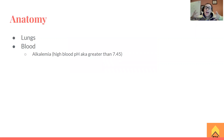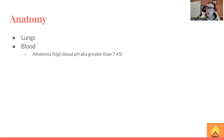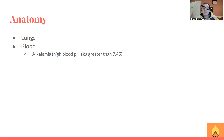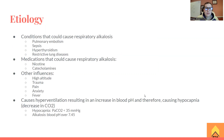So let's go over respiratory alkalosis. It's going to be a problem with the ability for the lungs to breathe properly. We're going to see alkalemia in the blood — when something becomes more alkaline, we are getting higher up on the pH scale. Normal blood pH is between 7.35 and 7.45. If we're alkalotic, our blood pH is going to be higher than 7.45.